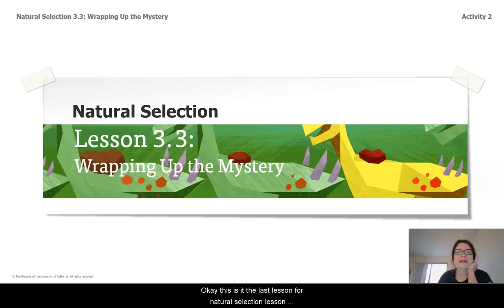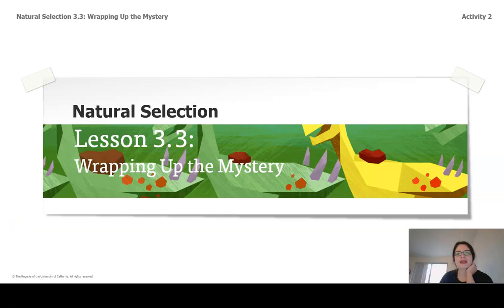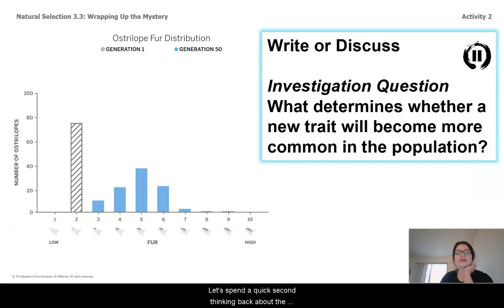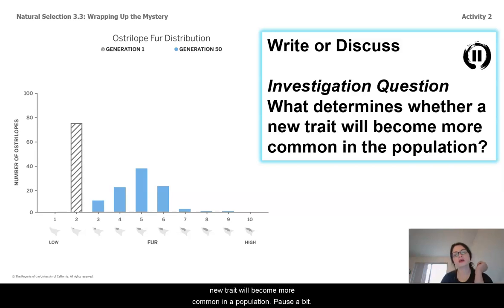Okay, this is it — the last lesson for natural selection, lesson 3.3, wrapping up the mystery. Let's spend a quick sec thinking back about the Australopes we saw earlier and what determines whether a new trait will become more common in a population.